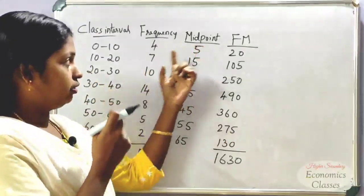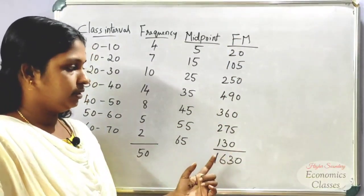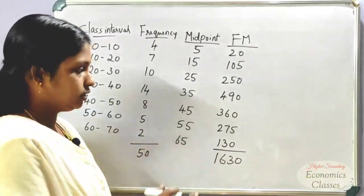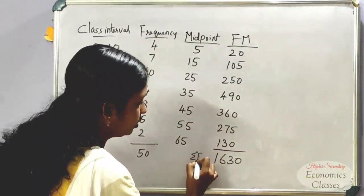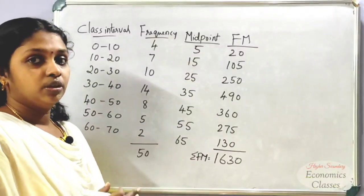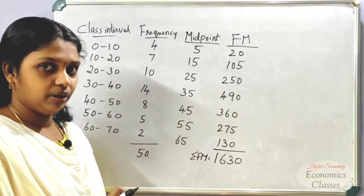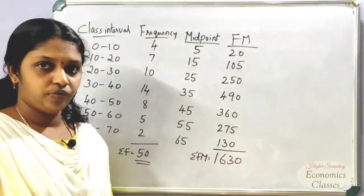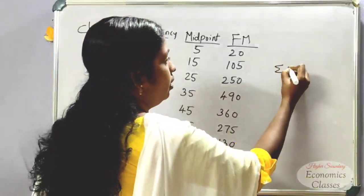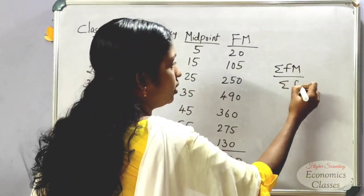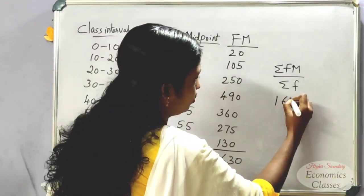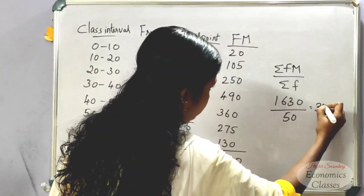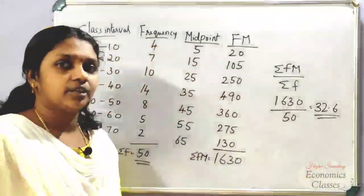We multiply and add all fm values to get Σfm. The numerator is Σfm divided by Σf. The total frequency Σf equals 50. Dividing Σfm by 50, the answer for the arithmetic mean is 32.6.